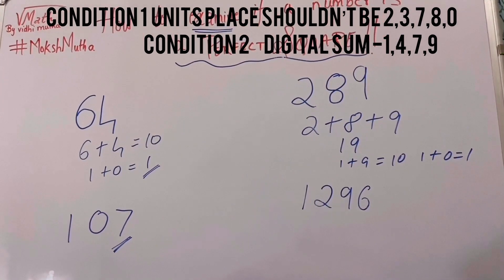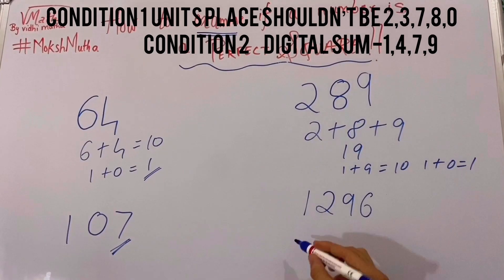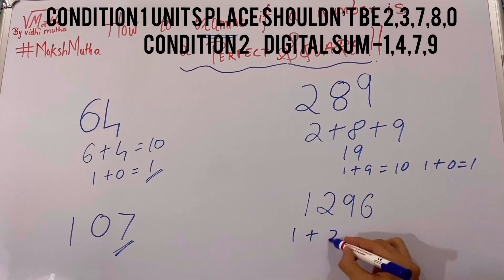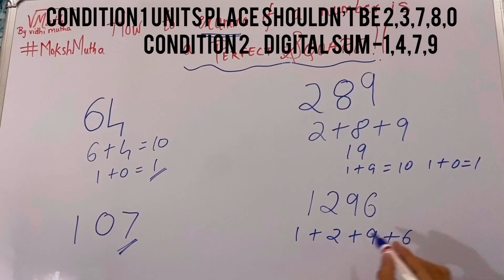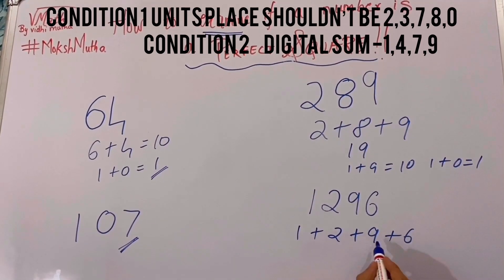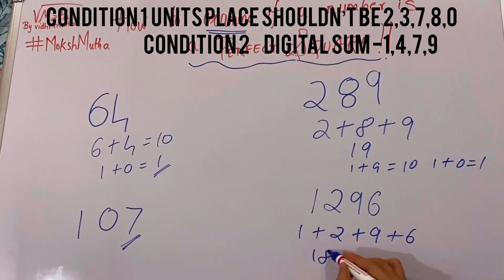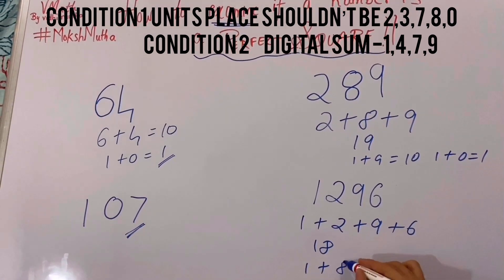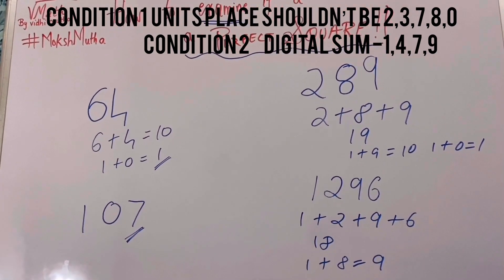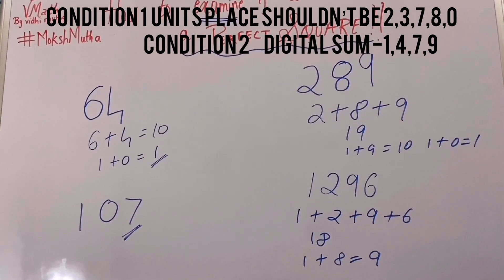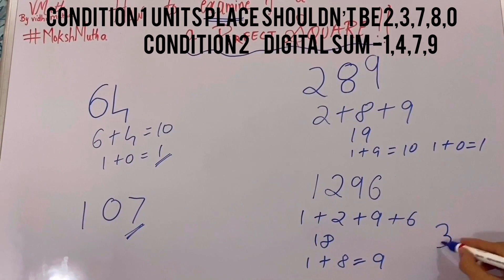The next number is 1296. First we will do the digital sum: 1 plus 2 plus 9 plus 6. 1 plus 2 is 3, 3 plus 9 is 12, 12 plus 6 is 18, again 1 plus 8 is equal to 9. The digital sum is 9, and yes, it is a perfect square number — we know that it is the square of 36.